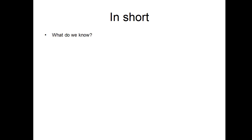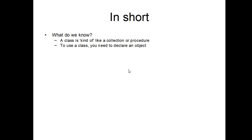So let's review. What do we know about classes and object-oriented programming? We know that a class is kind of like a collection of procedures — when you create a class, you have the same possibility to define inside several procedures, called methods, but that's just another name for the same thing. We also know that to use a class you need to declare an object, and we know that an object is really kind of like a regular variable, except when you go further in your use of objects your variable can behave in a new way.